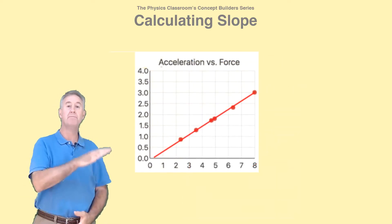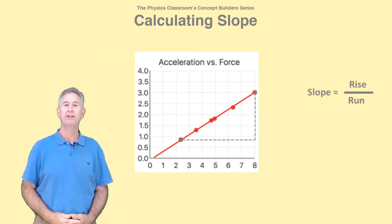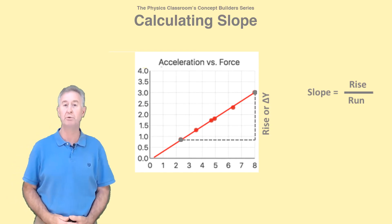Slope refers to the steepness of a line on a graph. It is the rise divided by the run. The rise is the change in the y-coordinate value between any two points on the line.